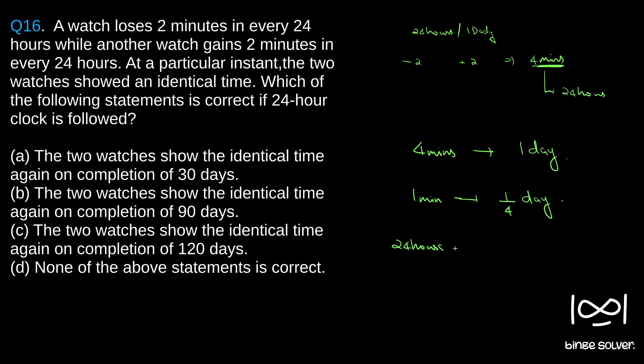24 hours in minutes is 24 into 60 minutes. For 24 into 60 minutes it will take 24 into 60 by 4 days.